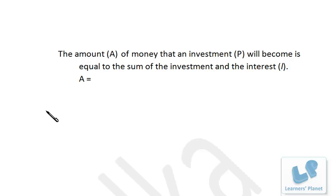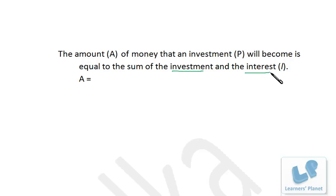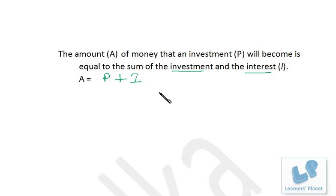Here is one more verbal expression to convert: the amount A of money that an investment P will become is equal to the sum of investment and interest. So A equals P plus interest. If you learn to convert verbal expressions into algebraic expressions, a good number of problems can be solved very easily.